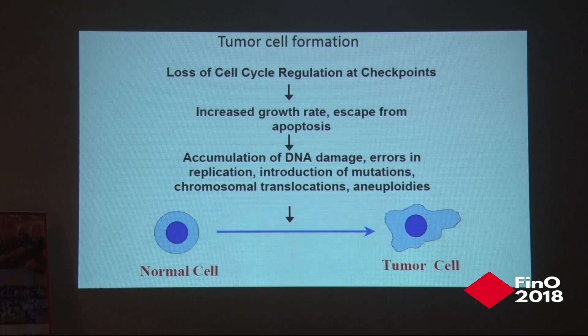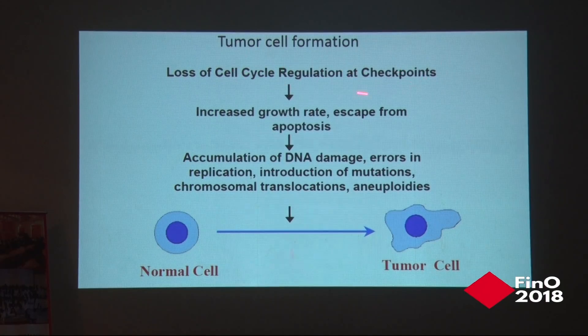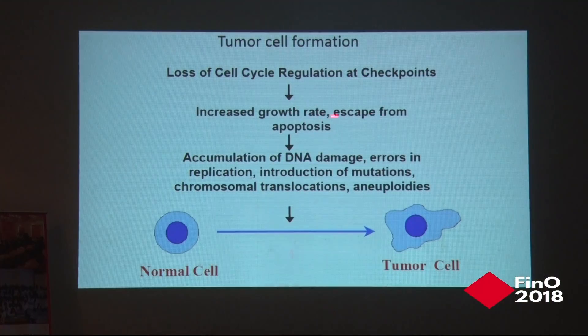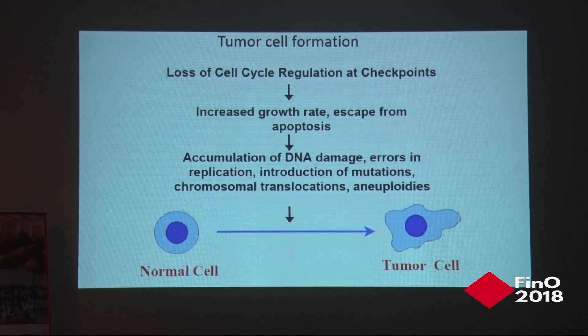What happens in tumor cells? The cell cycle is a very tightly controlled process, but in cancer there is a loss of checkpoint regulation. Cancer occurs when mutations or events in the cell cycle prevent cells from stopping themselves even when there is a mutation in the DNA. When a checkpoint is lost, there is increased growth rate and escape from apoptosis. Under normal conditions, if a cell escapes the checkpoint with mutant DNA, another cascade of checkpoint events causes that cell to die by apoptosis. In cancer, cells are able to escape this process, so mutant DNA is replicated over and over.